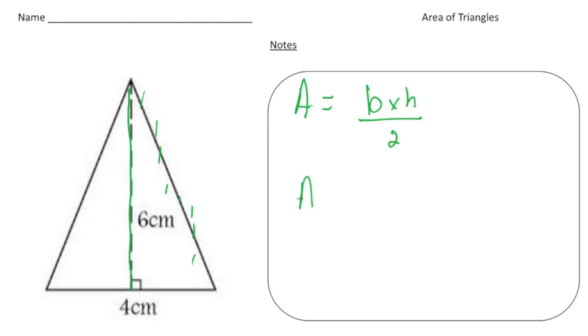So for this problem we're going to have area equals the base is 4, 4 times the height which is 6, and we're going to divide that by 2. So 4 times 6 is 24, and 24 divided by 2 is 12.